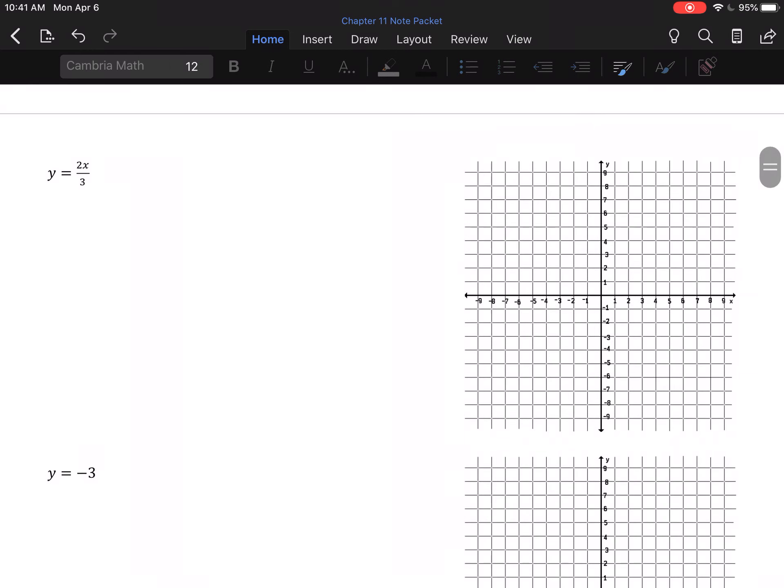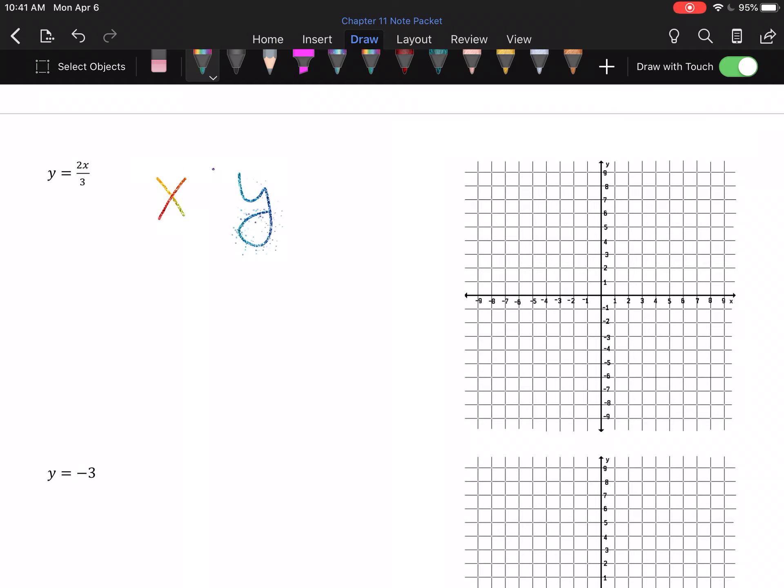Moving on, we have Y equals 2X thirds. So, X and Y. Now, here, I don't want to use negative 2, negative 1, 0, 1, and 2. Notice, we've got a fraction. We're dividing by 3. In order to make my life easier, I want to use multiples of 3 for my X terms. So, I'm going to use negative 6, negative 3, 0, 3, and 6. Anytime I have a fraction, I want to use multiples of the denominator. It's going to make the numbers we get to plot so much easier to deal with.